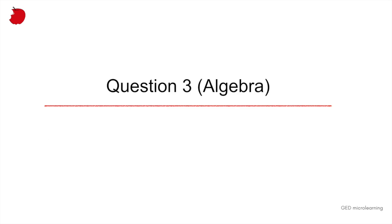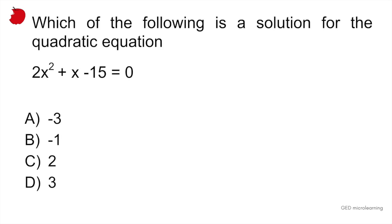Question 3 is an algebra problem. It says, which of the following is a solution for the quadratic equation. So they're giving you a quadratic equation, 2x² + x - 15 = 0, and they want to know which value of x would make that true.